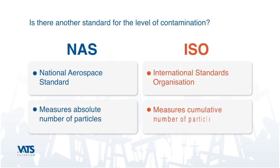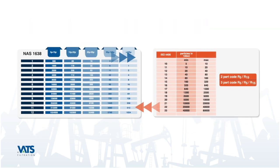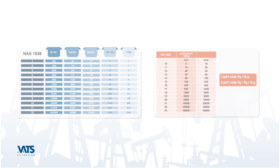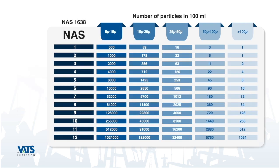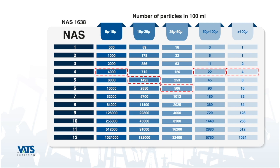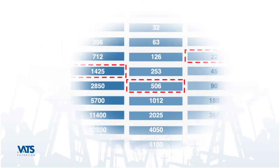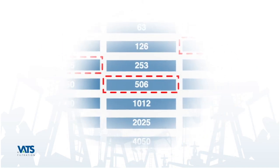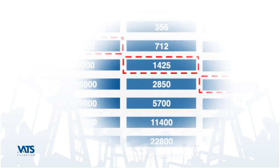An alternative to the NAS standard is the ISO standard. The key point of difference is that NAS is based on the absolute particle count whereas ISO is based on cumulative particle count. Converting from one to the other is quite easy. Looking at a live example of an actual oil sample, the band corresponding to the highest individual NAS value is used to designate the NAS number.